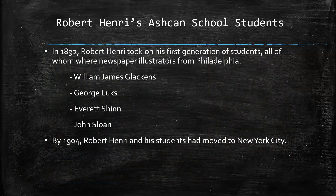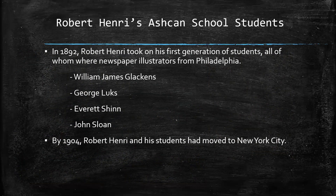Robert Henri eventually took on some students. In 1892, he took on his first generation, all of whom were newspaper illustrators in New York. That's important because the Ashcan style borrowed heavily from the sketchy quality of newspaper illustrations. They included William James Glackens, George Luks, Everett Shinn, and John Sloan. By 1904, Robert Henri and his students had all moved to New York City.